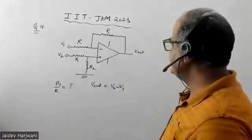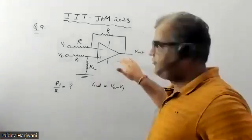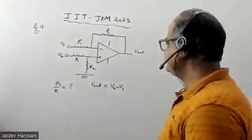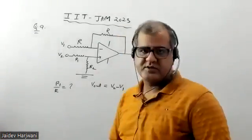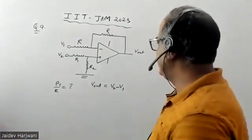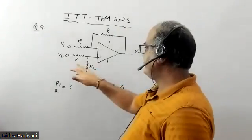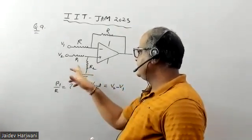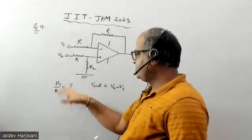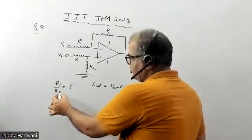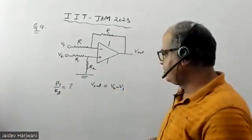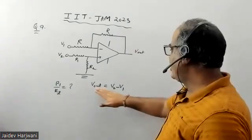Hello students, this is question number 9 from IIT JAM 2025. In this question, they have given one op-amp and they are asking for what value of R1 to R2 ratio such that the output value will be V2 minus V1.